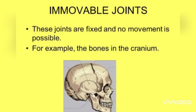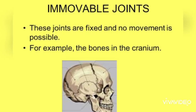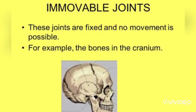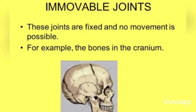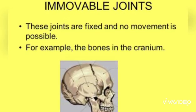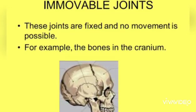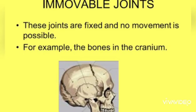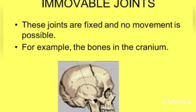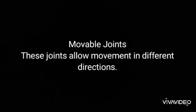Some joints are fixed and no movement is possible. Other joints, called movable joints, allow movements in different directions.